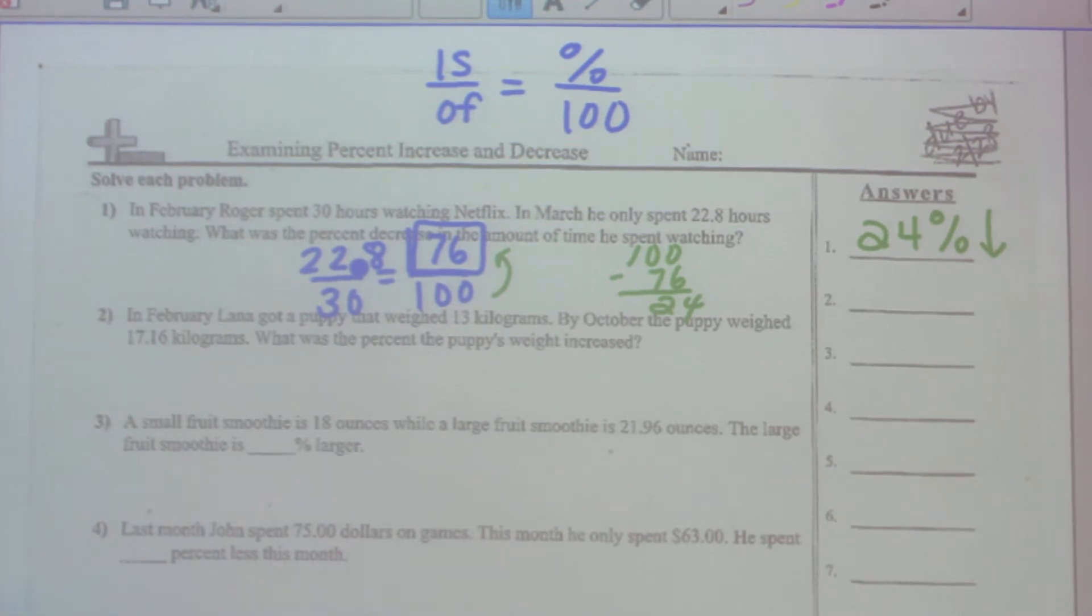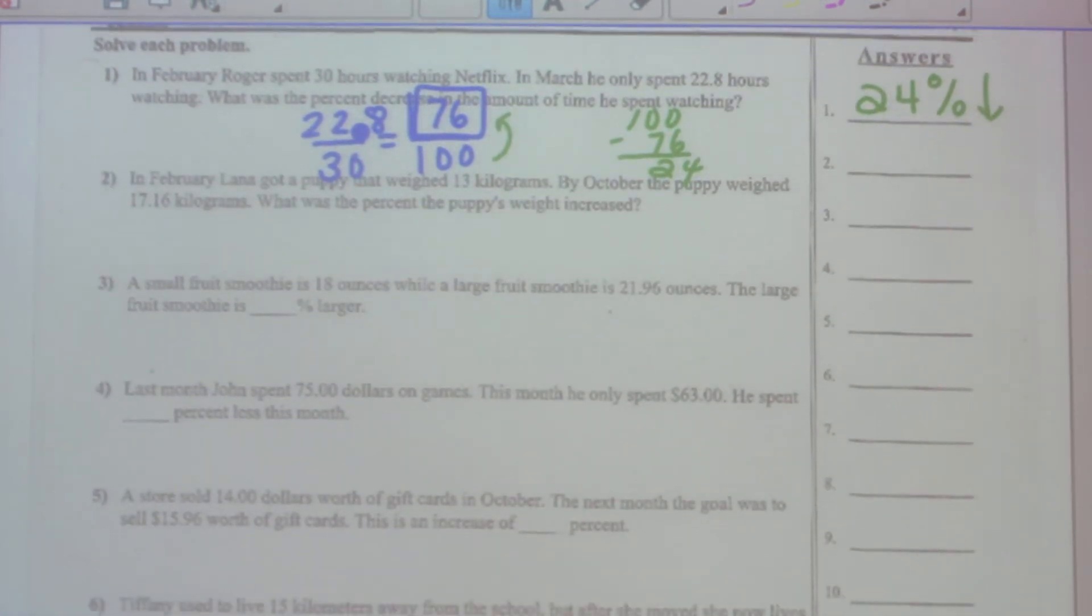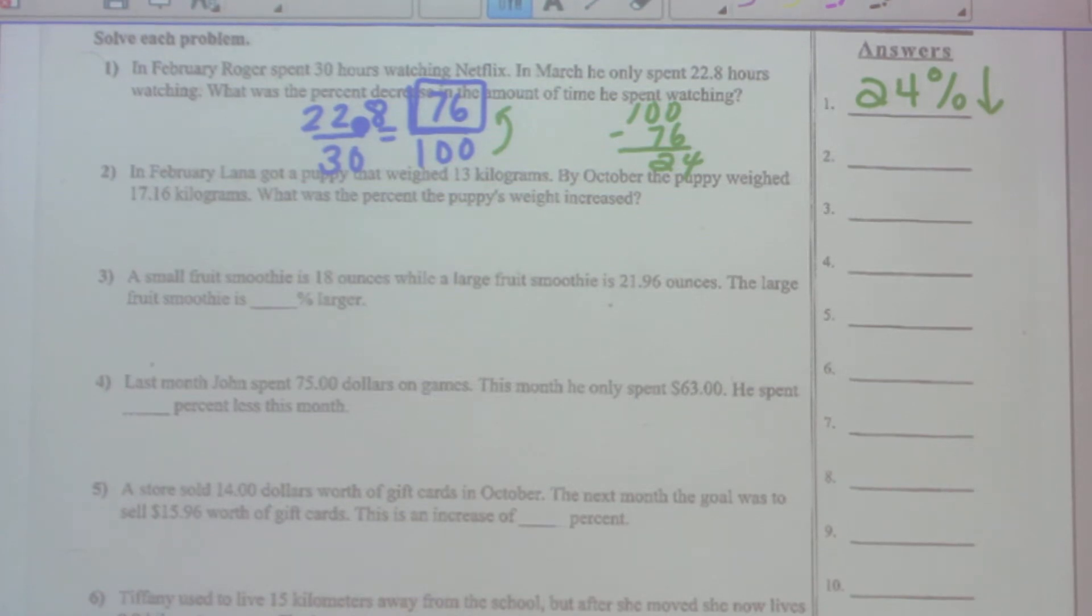Let's look at an increase and what happens there. In February, Lana got a puppy that weighed 13 kilograms. In October, the puppy weighed 17.16 kilograms. What was the percent of the puppy's weight increase?